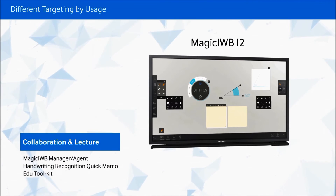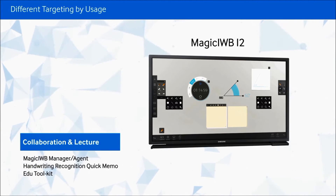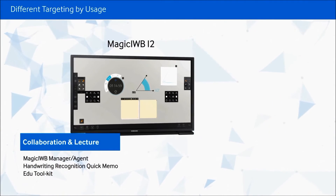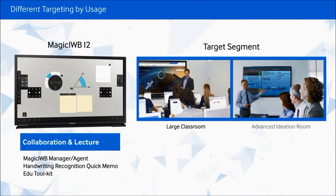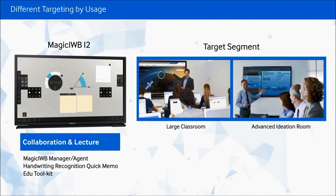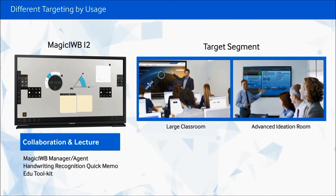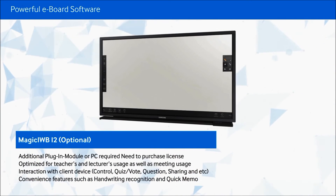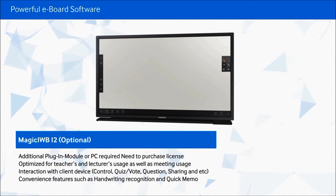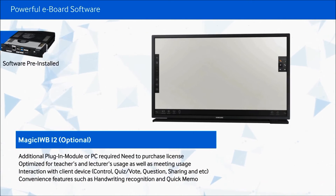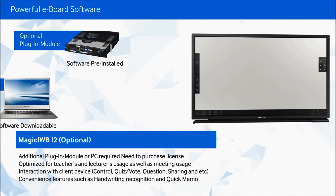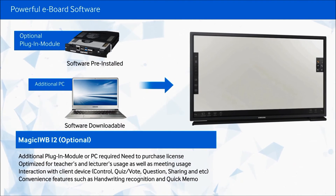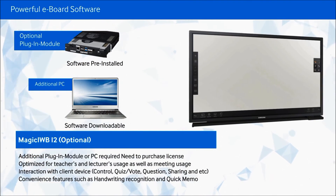Magic IWB i2 is an optional advanced e-board solution for those that want a more interactive presentation. The Magic IWB i2 runs on Windows and requires a selective Samsung plug-in module, PC or laptop. After downloading the software and purchasing the license, you can use our most advanced whiteboard solution.